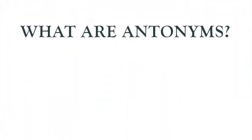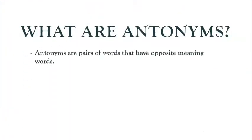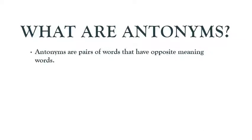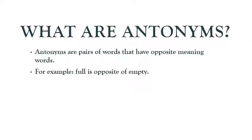What are antonyms? Antonyms are pairs of words that have opposite meanings. For example, full is the opposite of empty. Antonyms kya hain? Jo opposite words hote hain, ek dusre ke ulte meaning wale words hote hain. Jaise ki full kiska opposite hai? Empty ka.